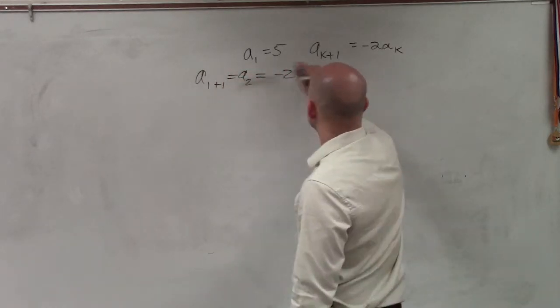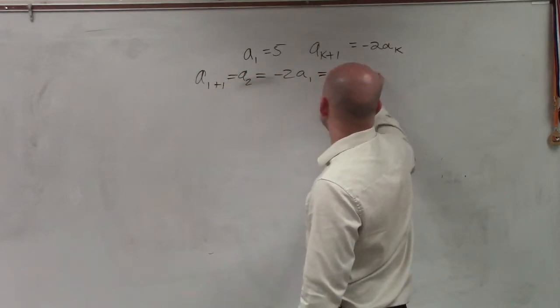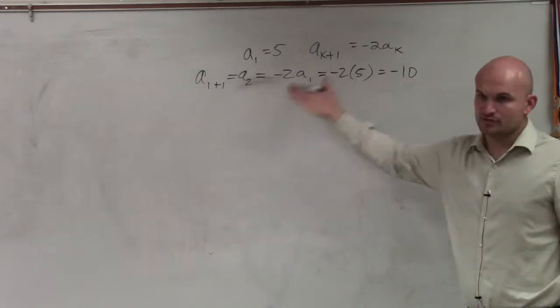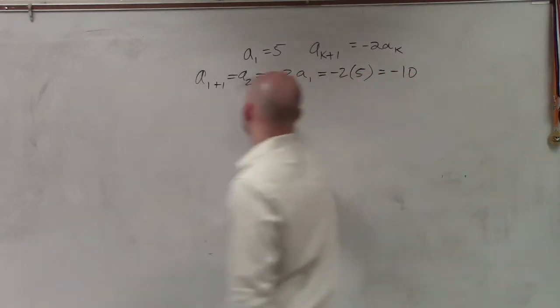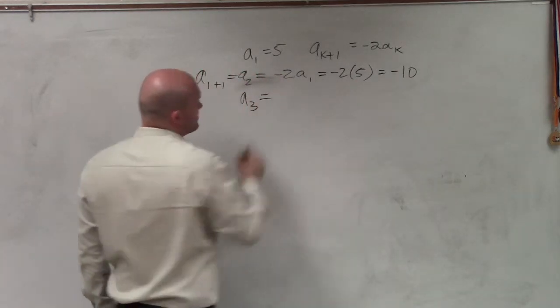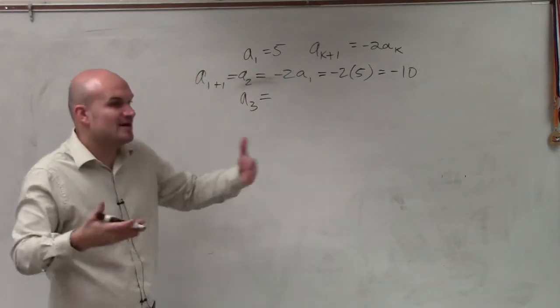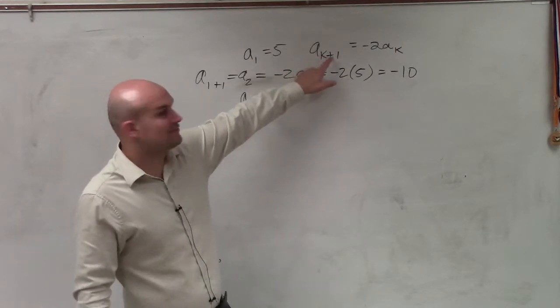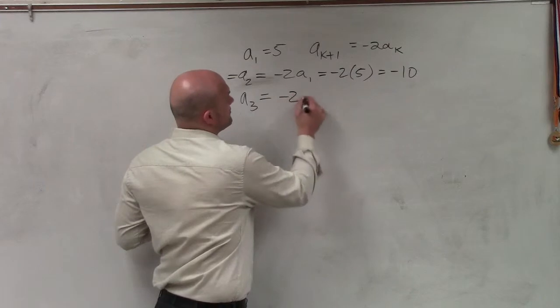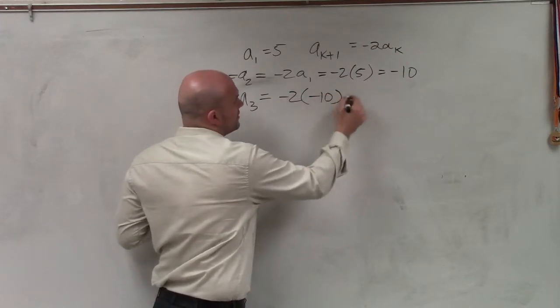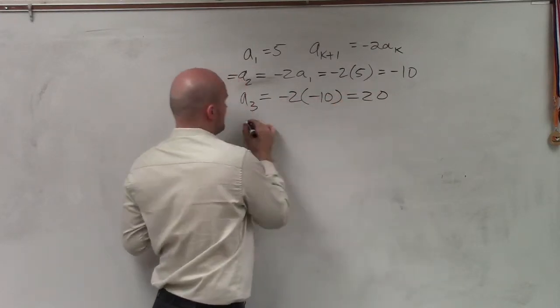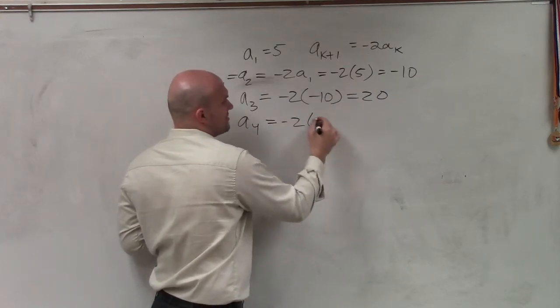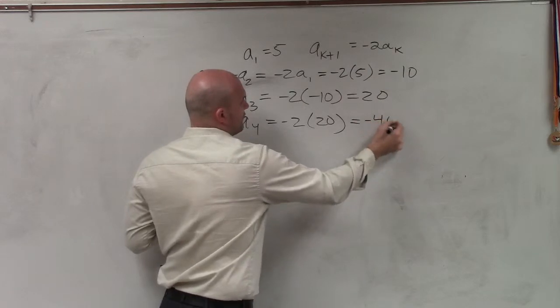Well, negative 2 times 5, or negative 2, a sub 1 equals 5, which equals negative 10. So a sub 2 is negative 10. Then you guys can see the pattern. Again, you just keep on following that pattern. To find a sub 3 is when you put a sub 2 in for 1. So it's really negative 2 times negative 10, which equals 20.